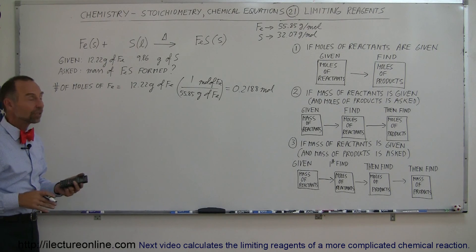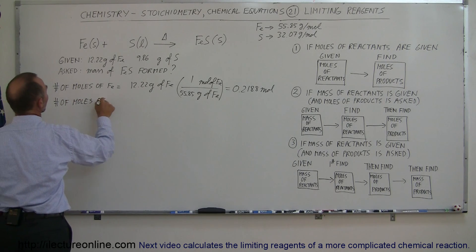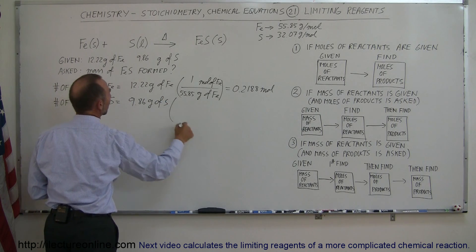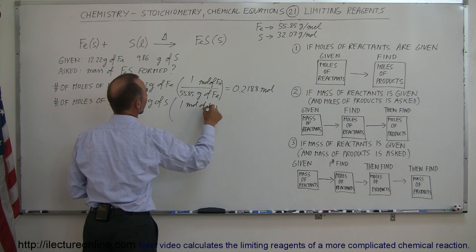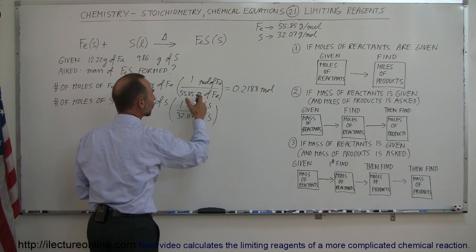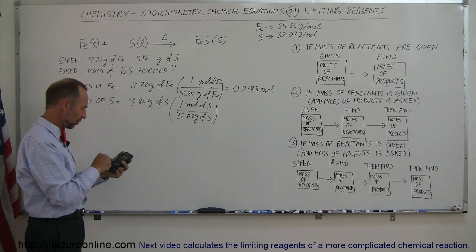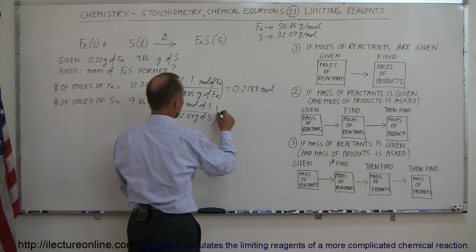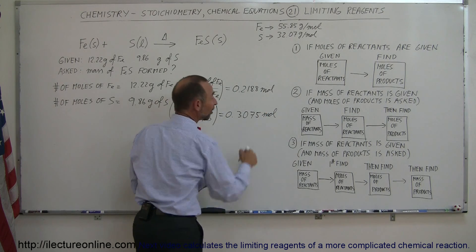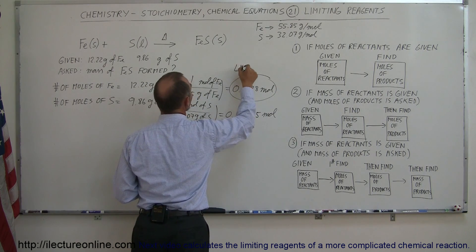If we have more moles of sulfur than iron, then iron will be the limiting reagent; if we have fewer moles of sulfur, then sulfur will be the limiting reagent. The number of moles of sulfur equals 9.86 grams of sulfur divided by 32.07 grams per mole, which gives 0.3075 moles. Since there is less iron than sulfur, iron becomes the limiting reagent — it's the limiting factor in our reaction.